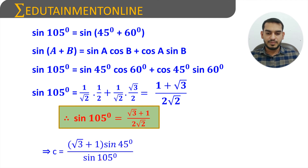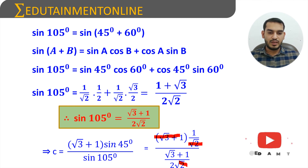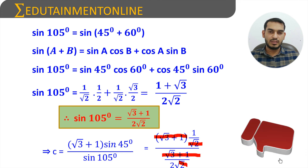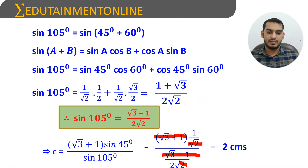Now, substituting here, in place of sin 45 degrees we write 1 by root 2 and sin 105 degrees as root 3 plus 1 by 2 root 2. So, we can cancel: root 2 and root 2 will get cancelled, and root 3 plus 1 and root 3 plus 1 will get cancelled. So this will come in the numerator, and the answer is 2 centimetres.